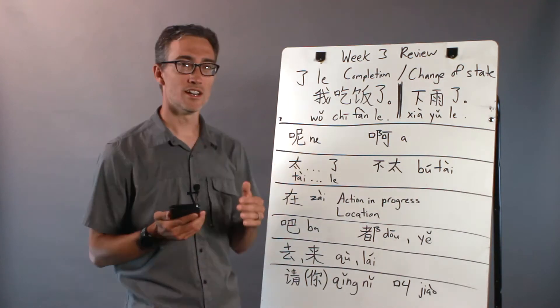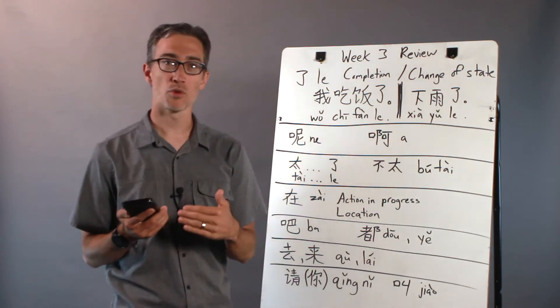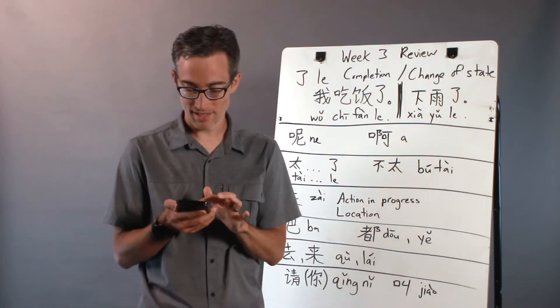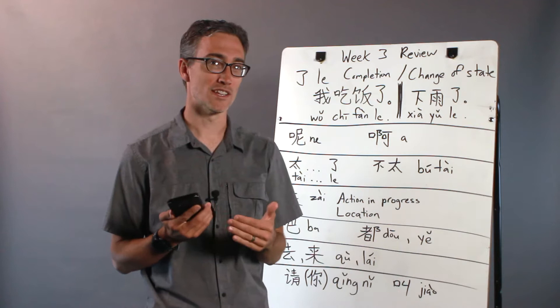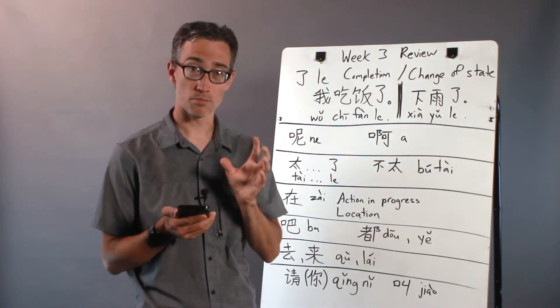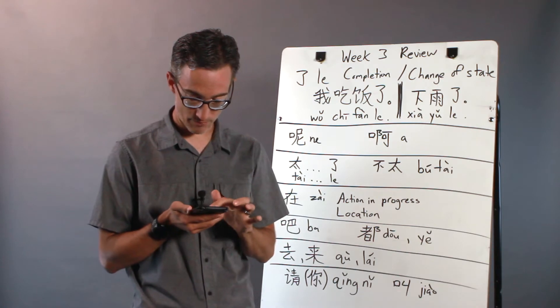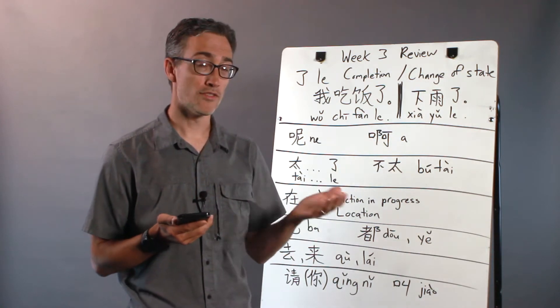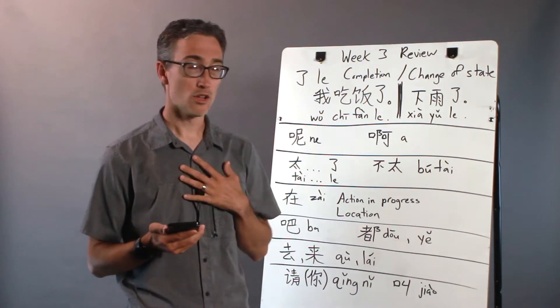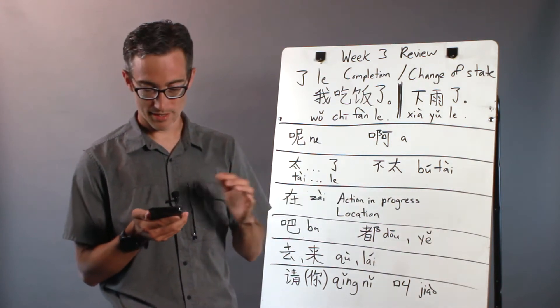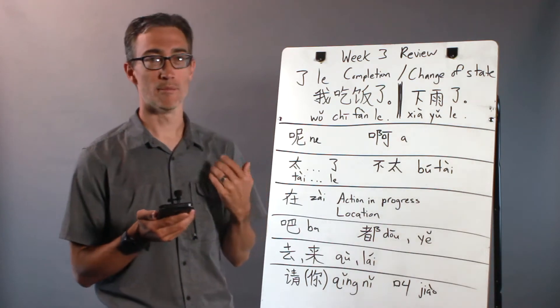We talked about 那 (ne). 那 makes a reciprocal question or like a how about this or what about this question. It can often be translated what about or how about in English. If I ask somebody 你最近怎么样, how have you been recently, and they say 我不错, 你呢, I'm not bad, how about you? And 我也很不错, I'm also not bad.